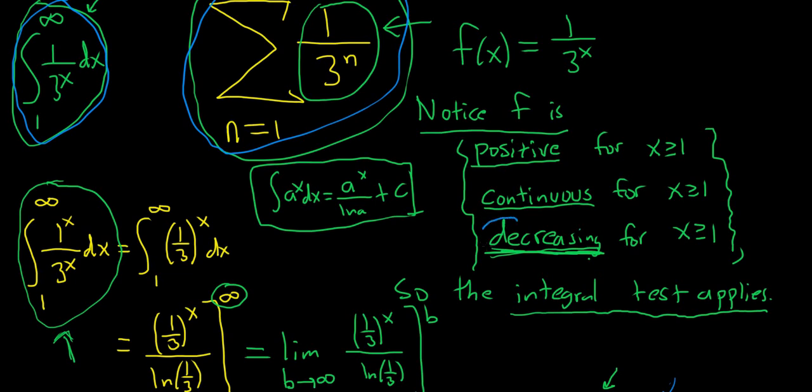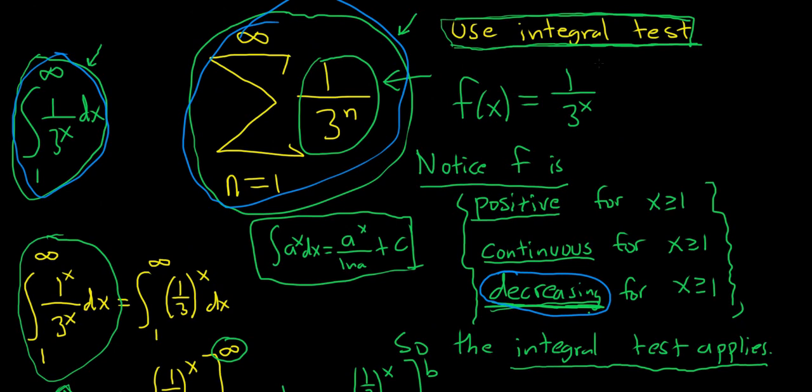If you're feeling a little bit insecure about the decreasing part, let me just show you really quickly. I'll just take a second. If you rewrite this function as one-third to the x, and you take the derivative, the derivative of one-third to the x is one-third to the x times ln one-third. It's a formula. Okay, the derivative of a to the x is a to the x ln a. So here it's one-third to the x ln one-third. And this is less than zero.